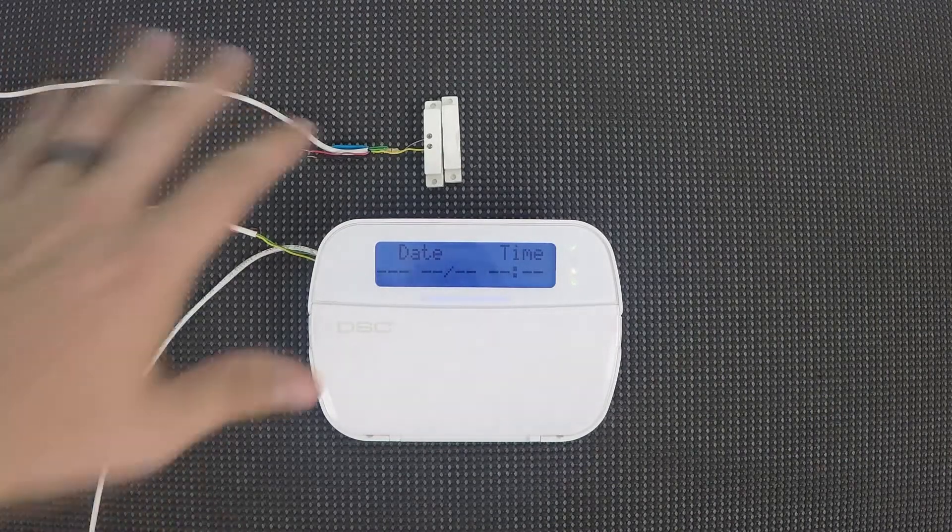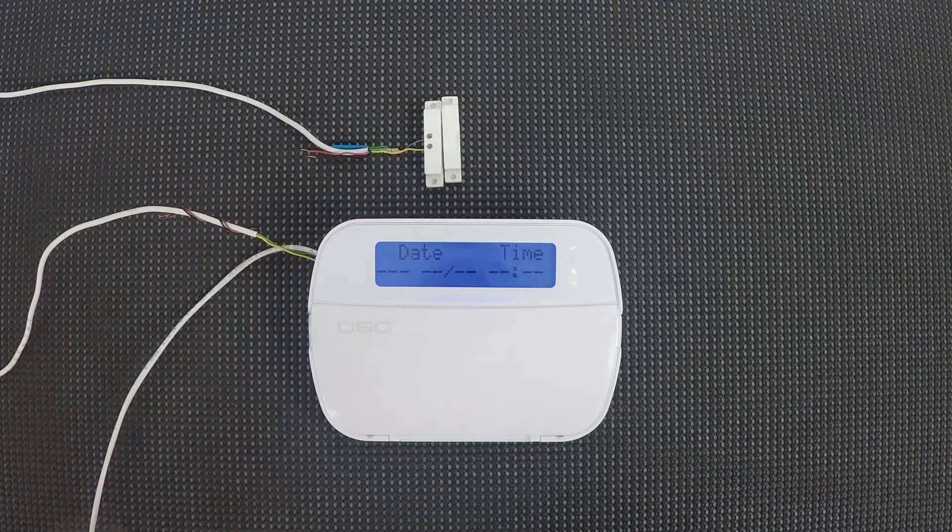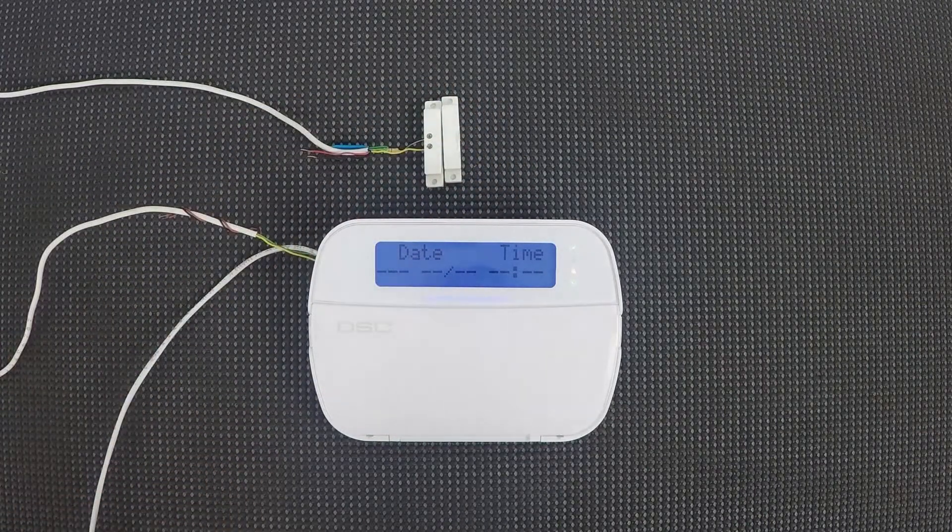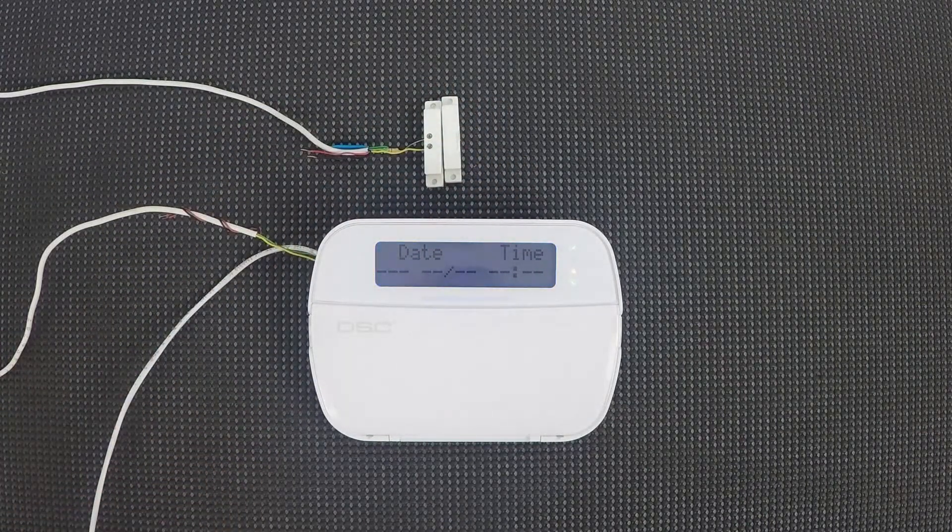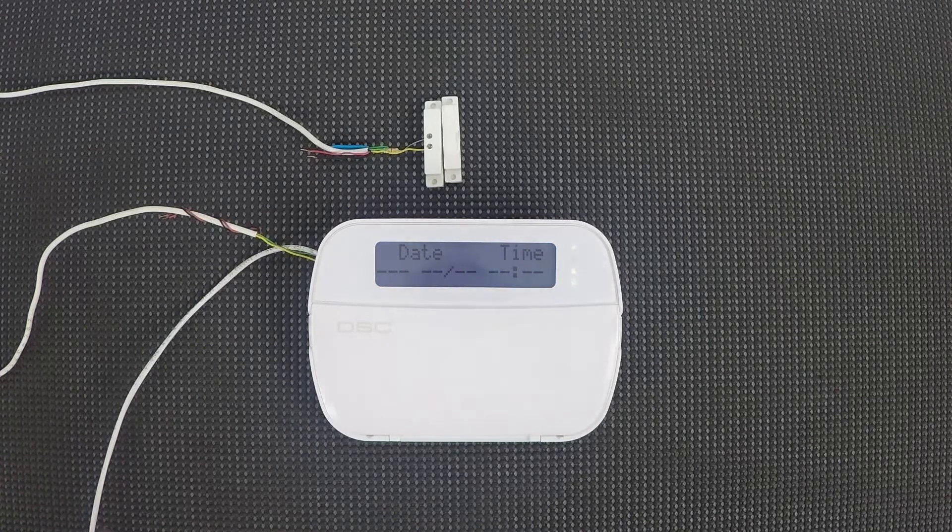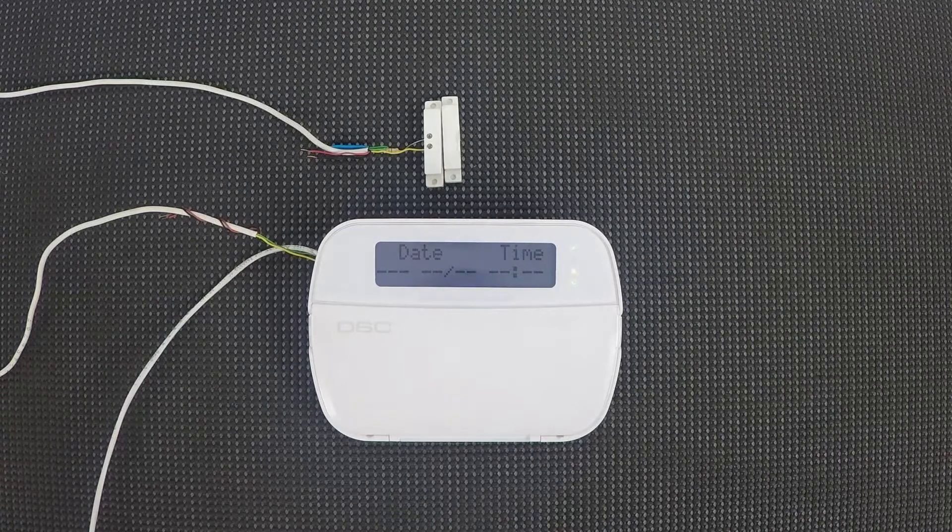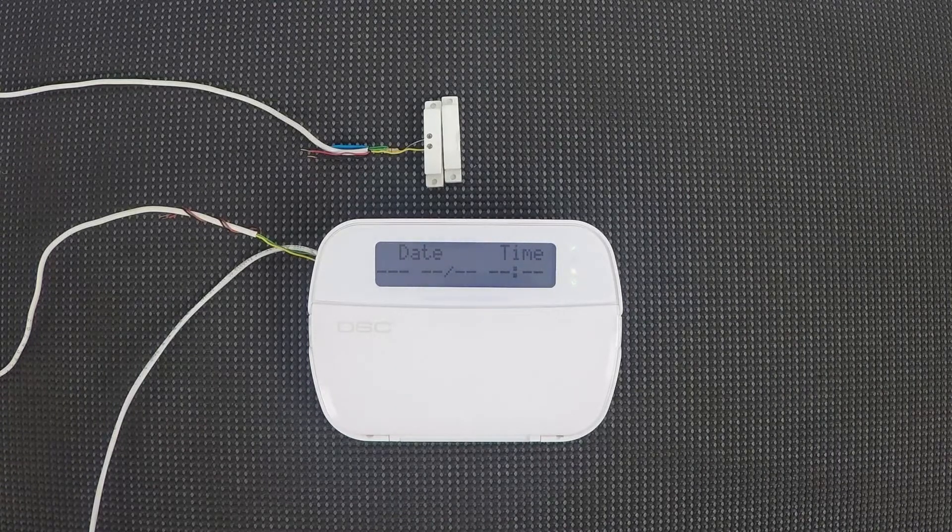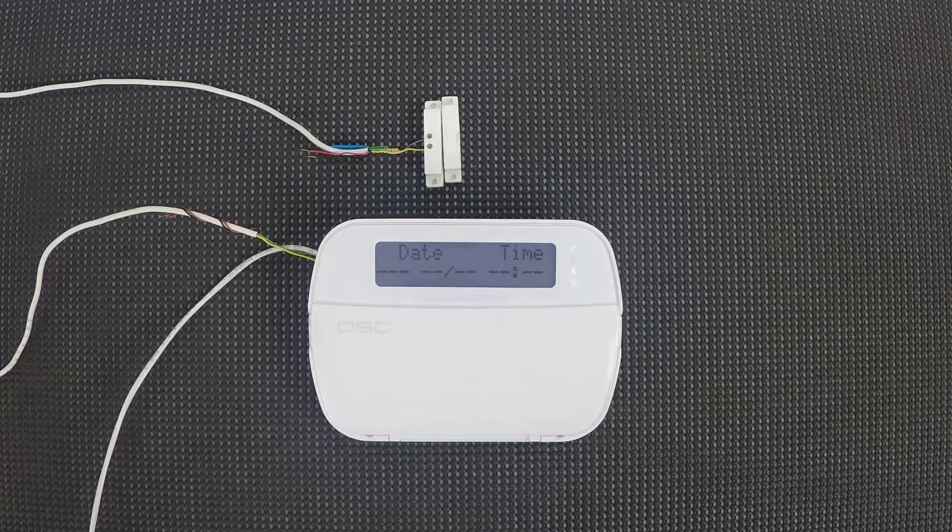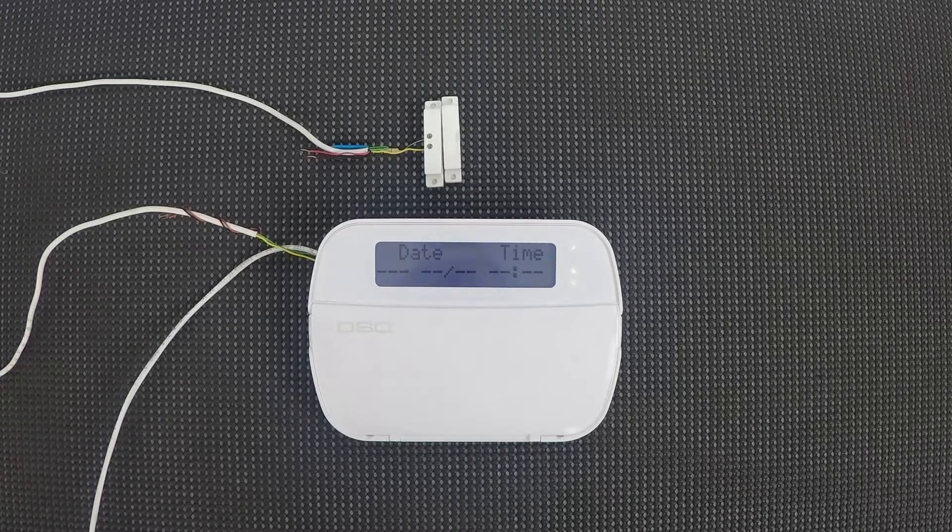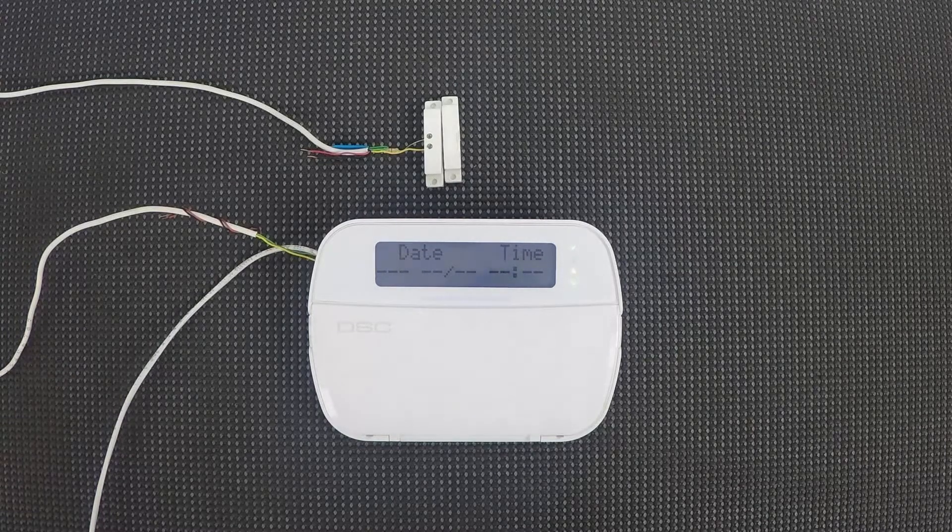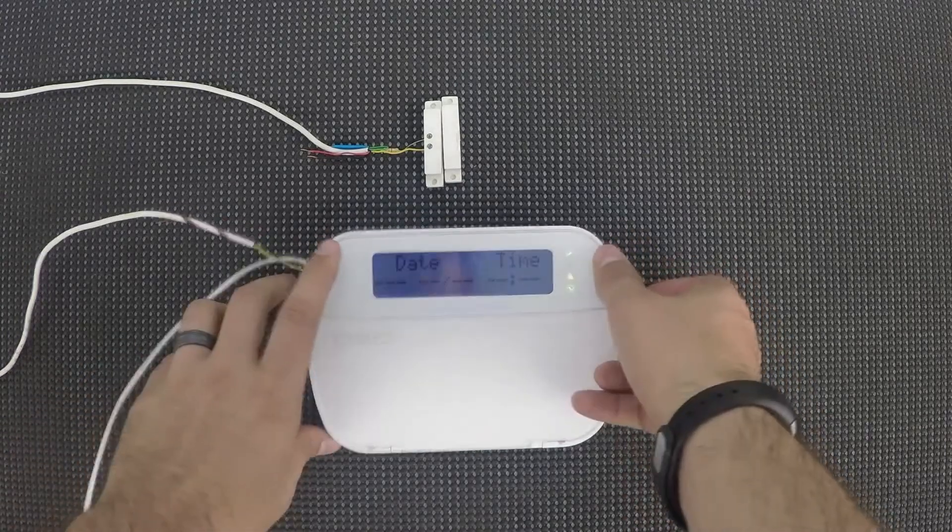So we're going to be putting this keypad zone on zone nine, just for our example, as if we've already used up the eight zones on the control panel, so it's a pretty practical option for us to add a keypad zone as opposed to adding a full zone expander when we only need the one zone.